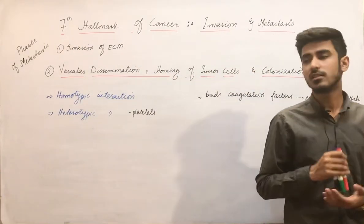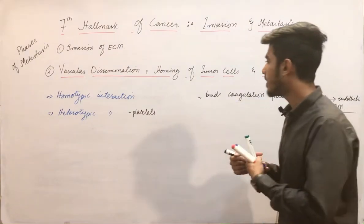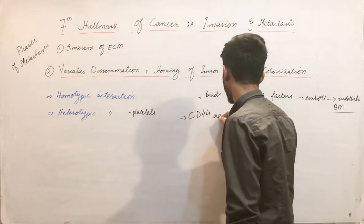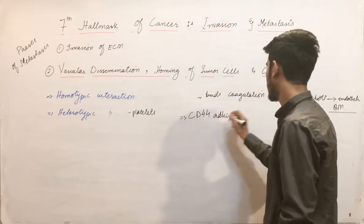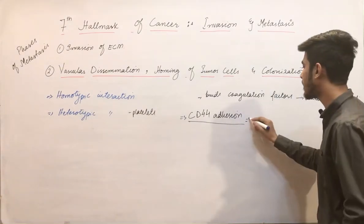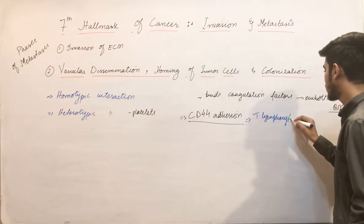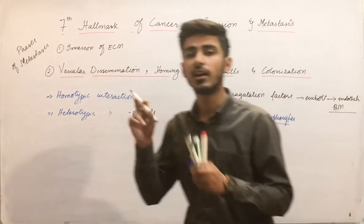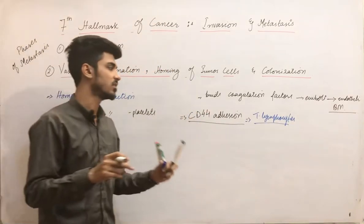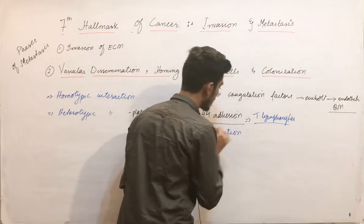After this invasion, there is an adhesion molecule called CD44. CD44 is an adhesion molecule or receptor that is normally expressed by T lymphocytes, and it helps T lymphocytes to migrate to distant sites.